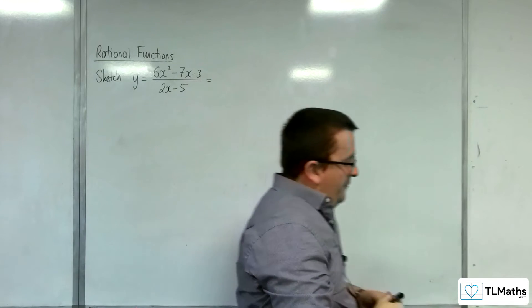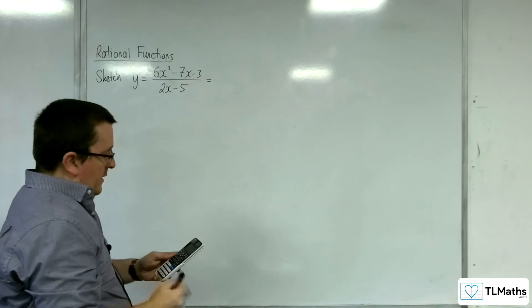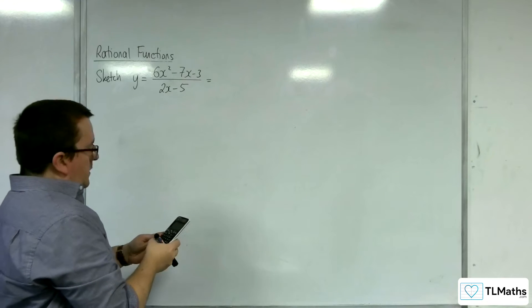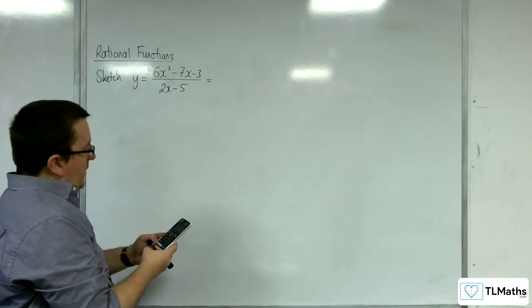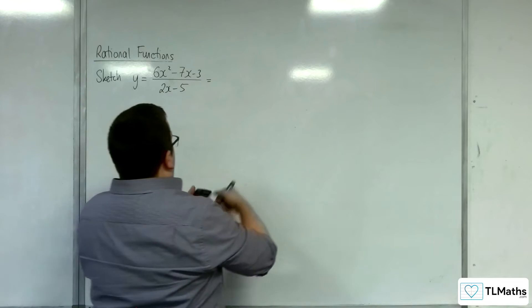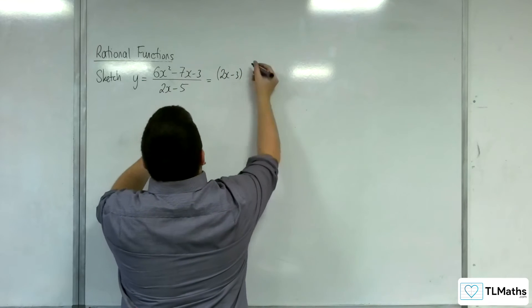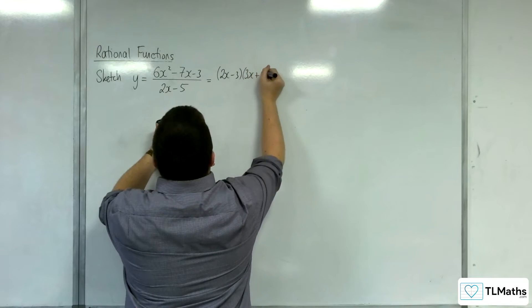Let's see if we can factorize that numerator. I'm going to use my calculator to help with that. So 6x² - 7x - 3. We're getting 3/2, so that would be (2x - 3), and we get -1/3, so that's (3x + 1).